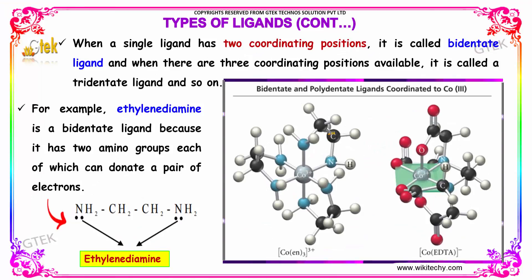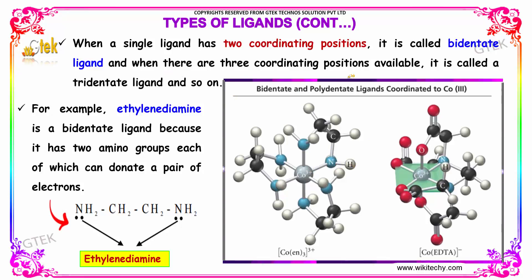When a single ligand has two coordinating positions, it is called bidentate. And when there are three coordinate positions available, it is called a tridentate ligand.